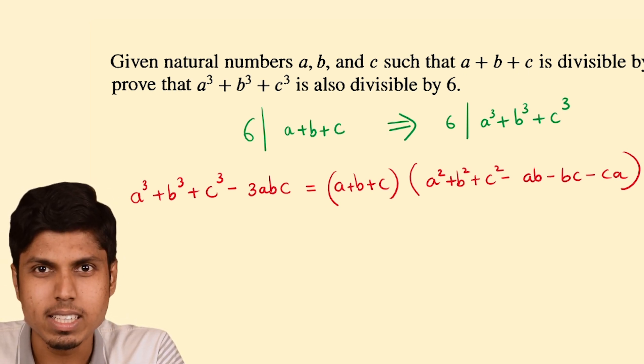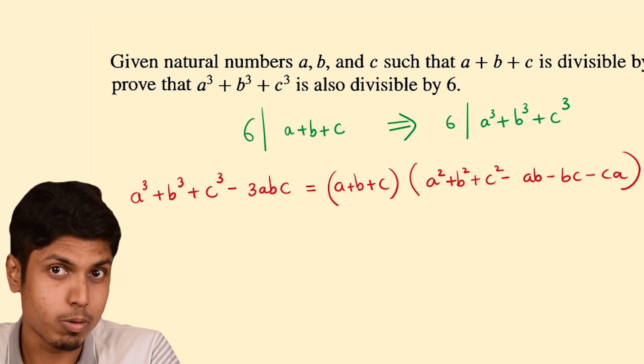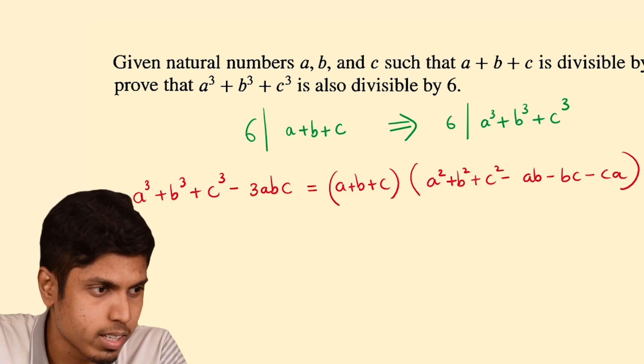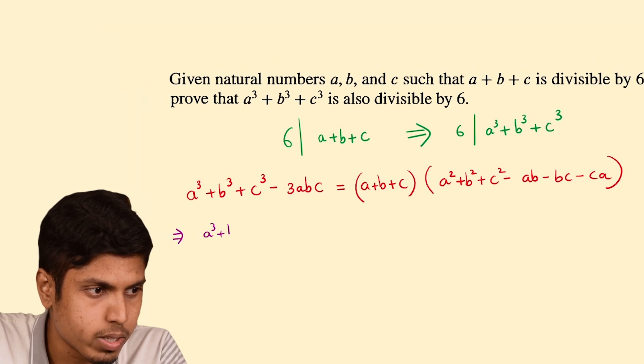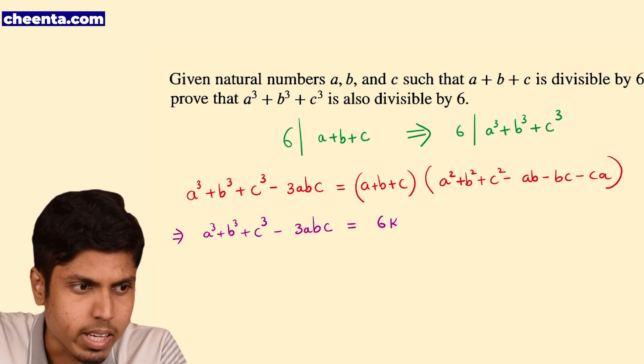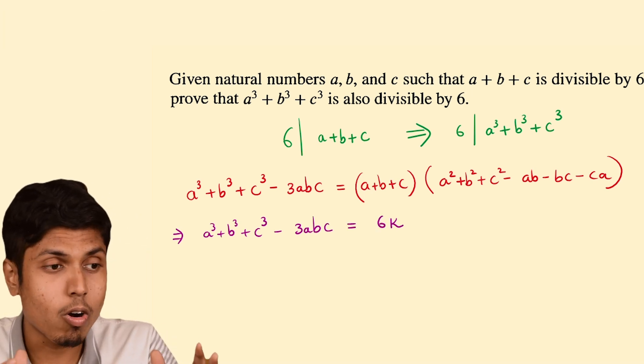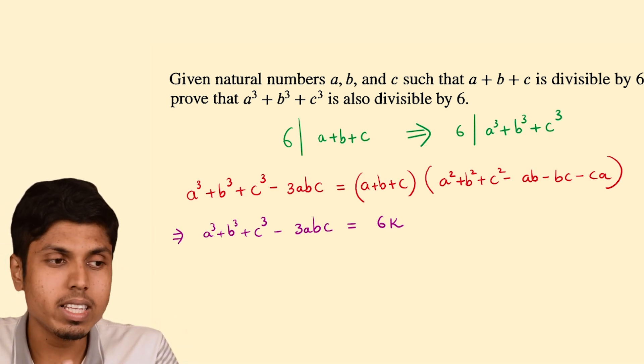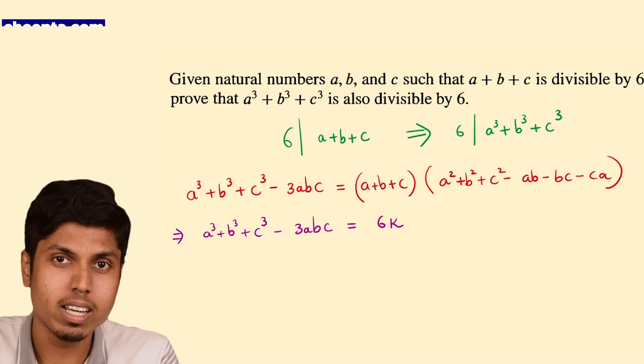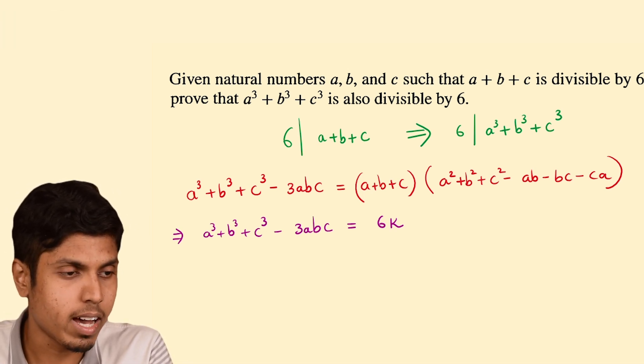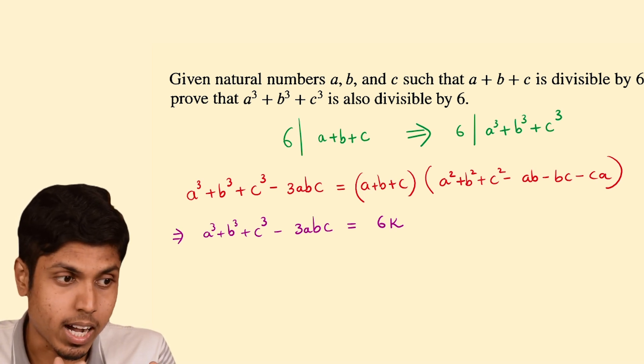But how exactly? A plus B plus C is already a multiple of 6. So we get that A cube plus B cube plus C cube minus 3ABC is some 6k because A plus B plus C is a factor of the expression in RHS. If 6 divides A plus B plus C, then it will divide any multiple of A plus B plus C as well. So that's why we have rewritten the RHS as 6k.